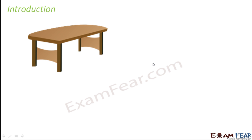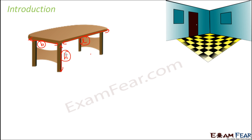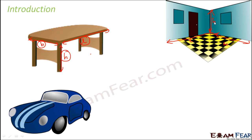We generally talk about the length, breadth or width, and height of the table. As these three parameters change, the appearance or size of the table also changes. Similarly, to describe a room you specify its length, width, and height. For a car as well, you talk about its length, breadth, and height.